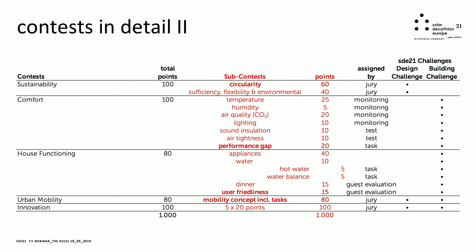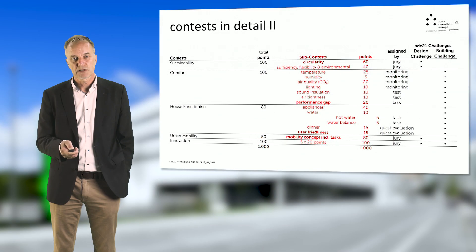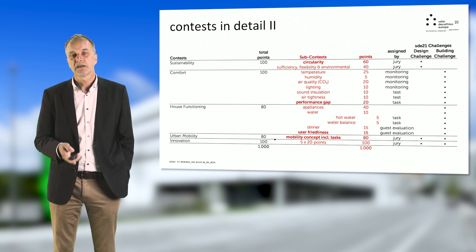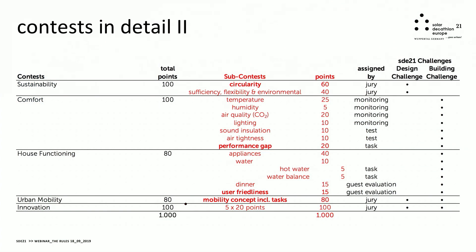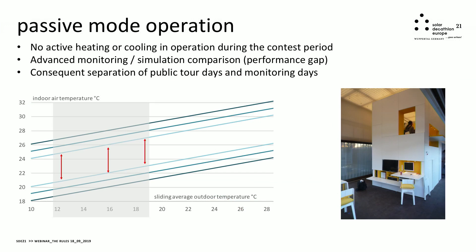For the next five contests, we again have some things highlighted. In the sustainability contest we have circularity — the recycling potential of the building construction — as a major issue in this edition. We also address more scientific parts like the performance gap, which is the difference between the simulated and the monitored performance of your demonstration unit. As new aspects, we created a guest evaluation for user-friendliness of your building, and a totally new contest is about urban mobility, split into a conceptual phase and some tasks with a demonstration unit. A new aspect is also the passive mode operation of buildings on the solar campus.